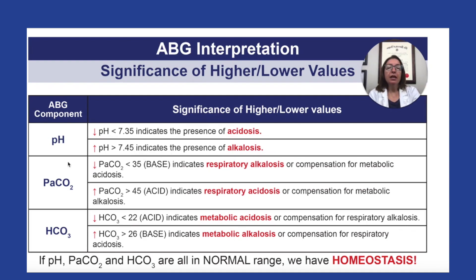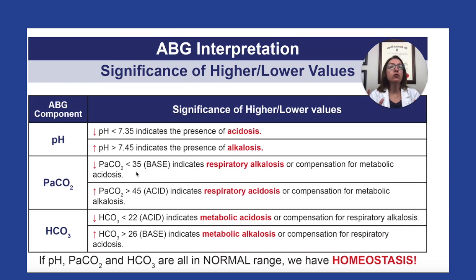When we look at PaCO2, which really represents the respiratory system, PaCO2 should be between 35 and 45. If it is below 35, that means we have respiratory alkalosis present.